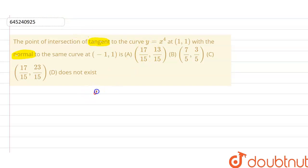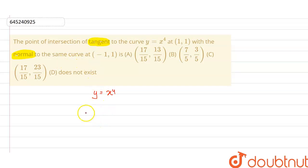The curve is given to us as y = x⁴. We have to find first the equation of the tangent at point (1, 1) and the equation of the normal at point (-1, 1), then we will find the intersection point. Now, dy/dx is the tangent slope.